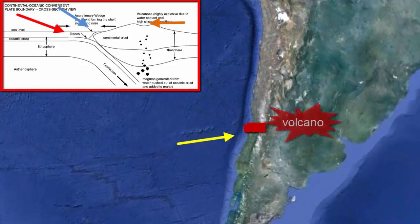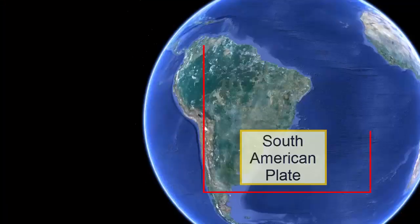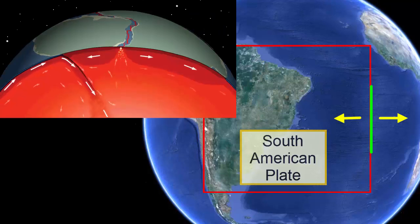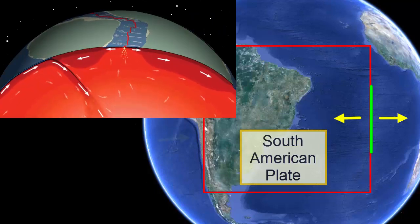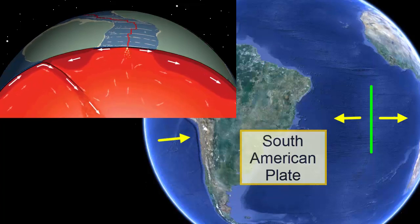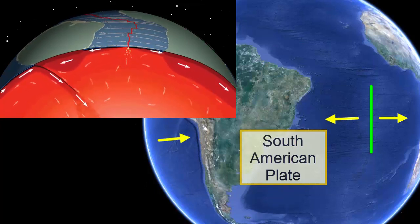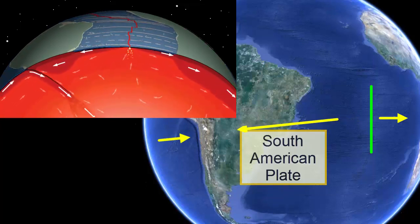South America is growing through volcanism and terrain accretion along its western margin. What about its eastern margin? That side is part of the same plate as the nearby ocean. The entire unit is being pushed away from the seafloor spreading center that marks the center of the Atlantic Ocean. That's why the subduction zone on the western margin even exists — the seafloor spreading in the Atlantic is causing the collision on the western margin.